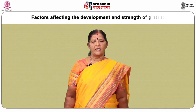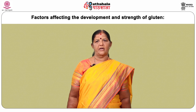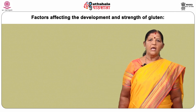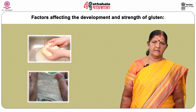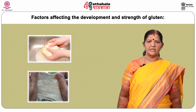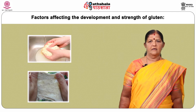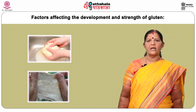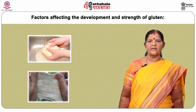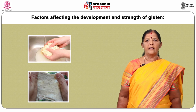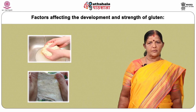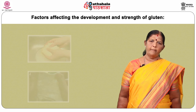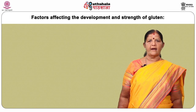Factors affecting the development and strength of gluten: If too much gluten develops, it makes baked foods like pie crust tough rather than tender. Weaker gluten is more extensible, making it stretchable and less prone to shrinking. Here are some of the factors that affect gluten development.